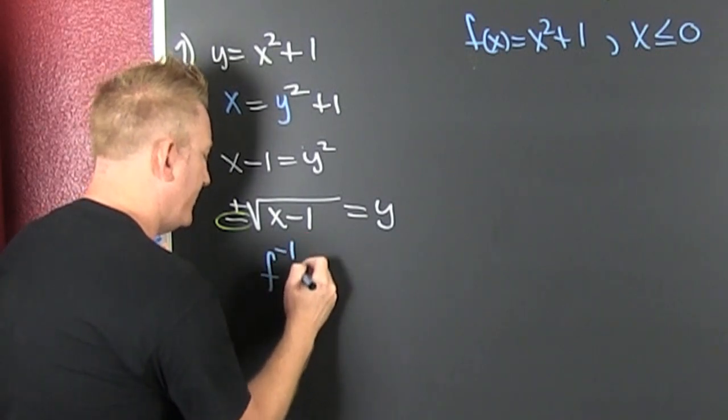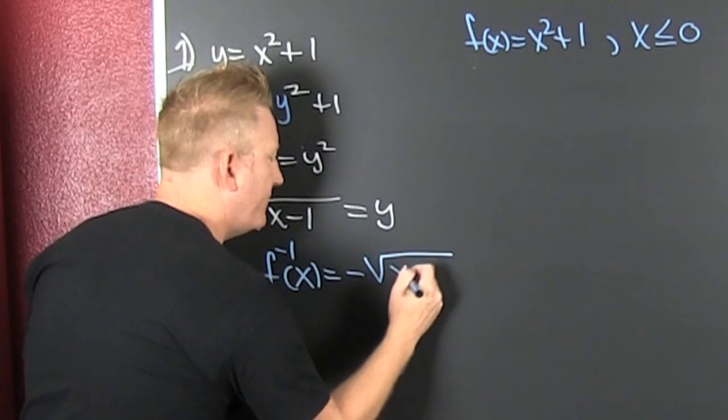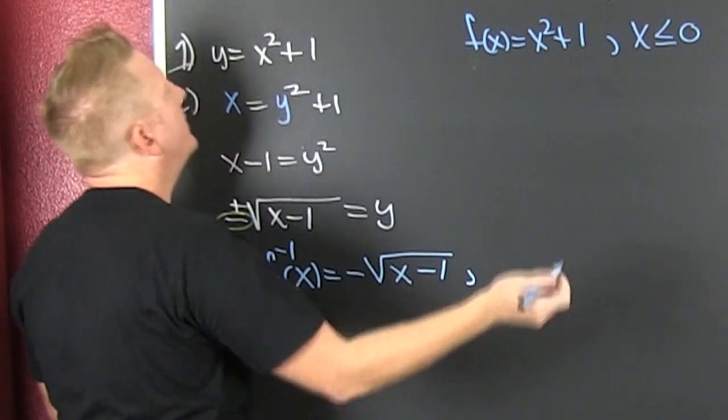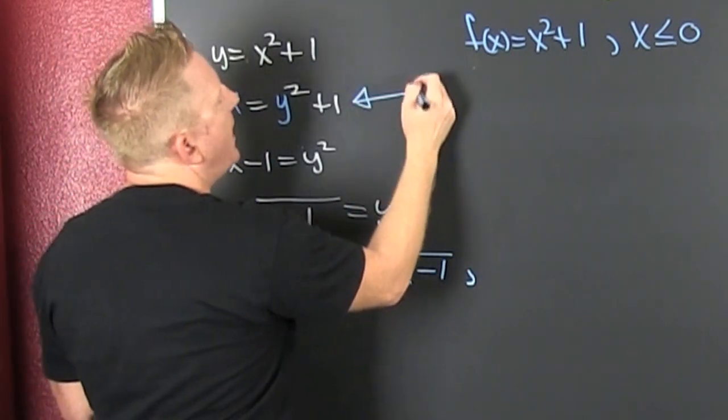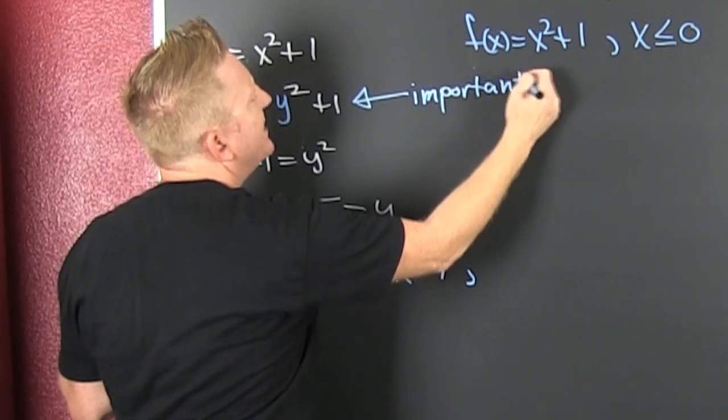Finally, f inverse of x is equal to negative the square root of x minus one. This is the important part here.